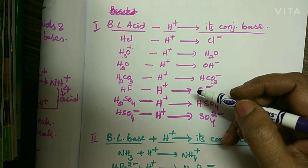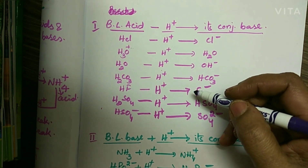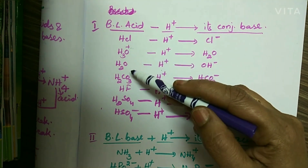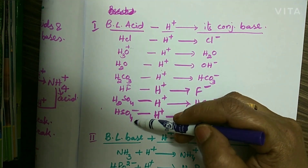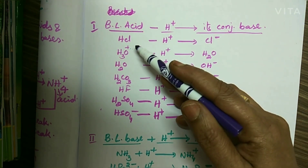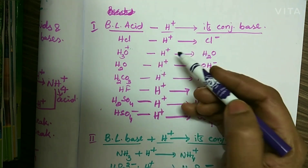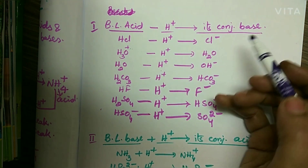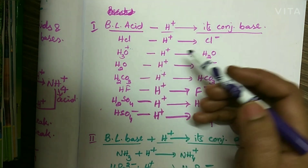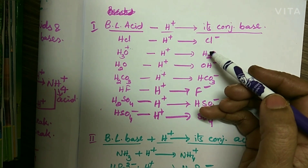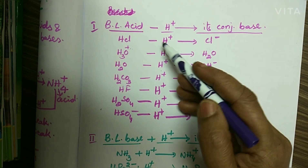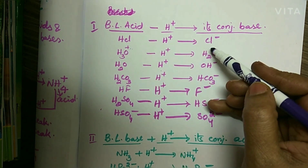Let us see some examples of Bronsted-Lowry acids and bases. Here is a list of all Bronsted-Lowry acids. A Bronsted-Lowry acid is a proton donor. All these acids, by losing a proton, form their conjugate bases. The conjugate base of a Bronsted-Lowry acid has one proton less. By deducting one proton from the acid, we will get its conjugate base.